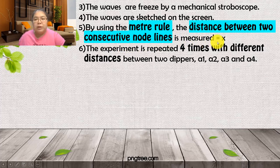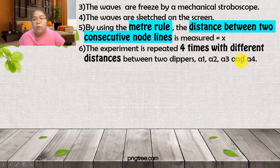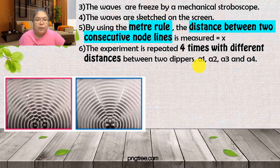Using the meter rule, measure the distance between two consecutive node lines — that is X. The experiment must be repeated a minimum of four times, giving five readings total. Mention the values as A1, A2, A3, and A4 for the different manipulate variable settings.